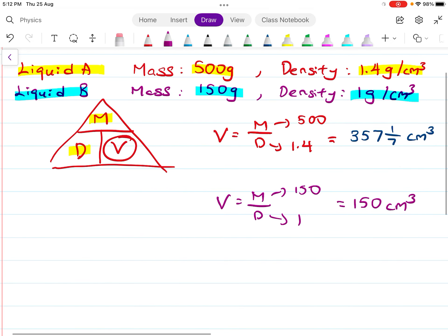Total volume is 357.17 plus 150, which equals around 507.14. So just round off to about 507 cm³. That's for part A.